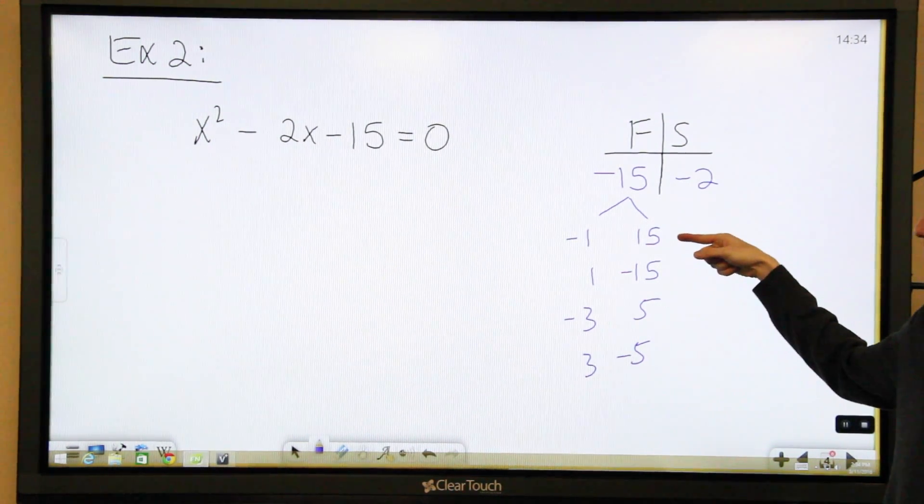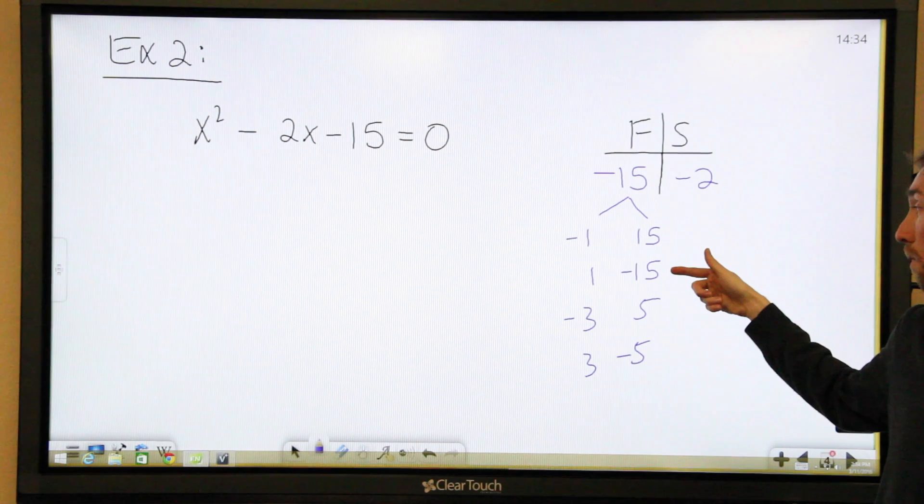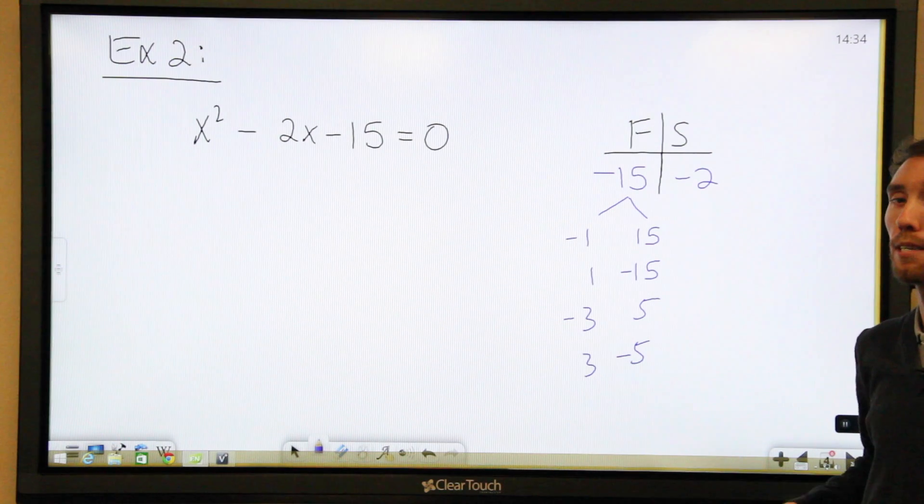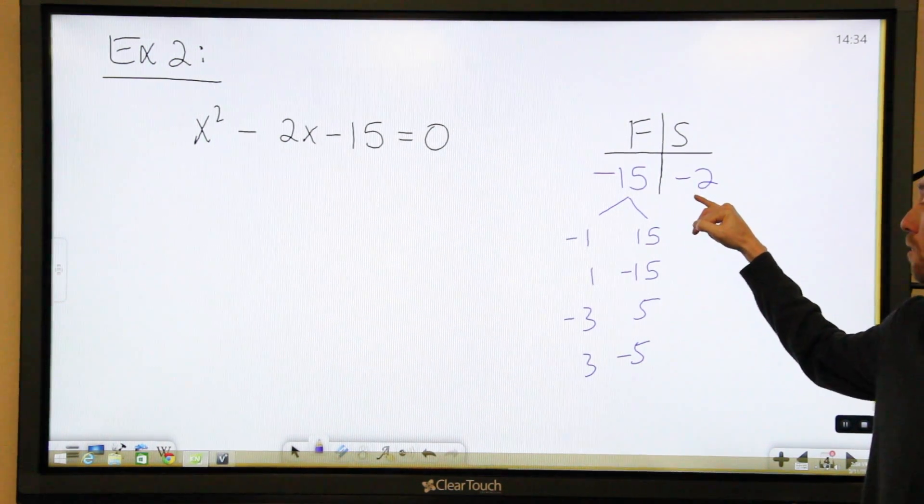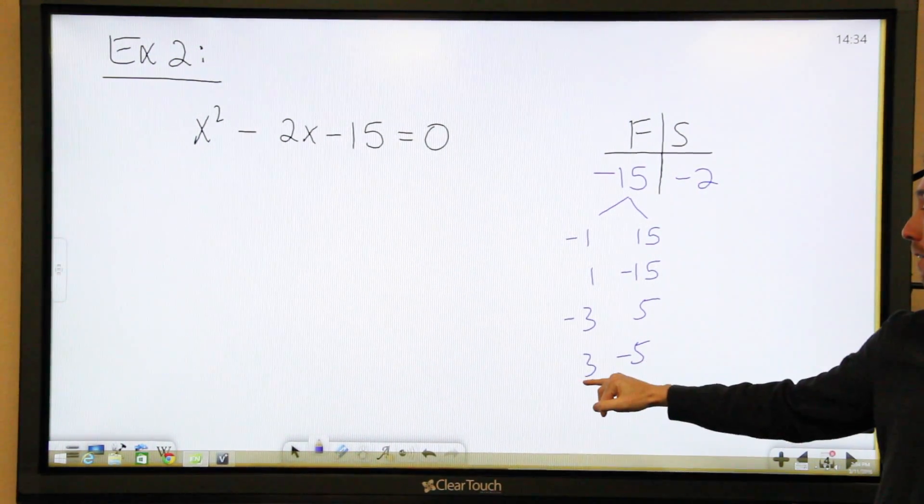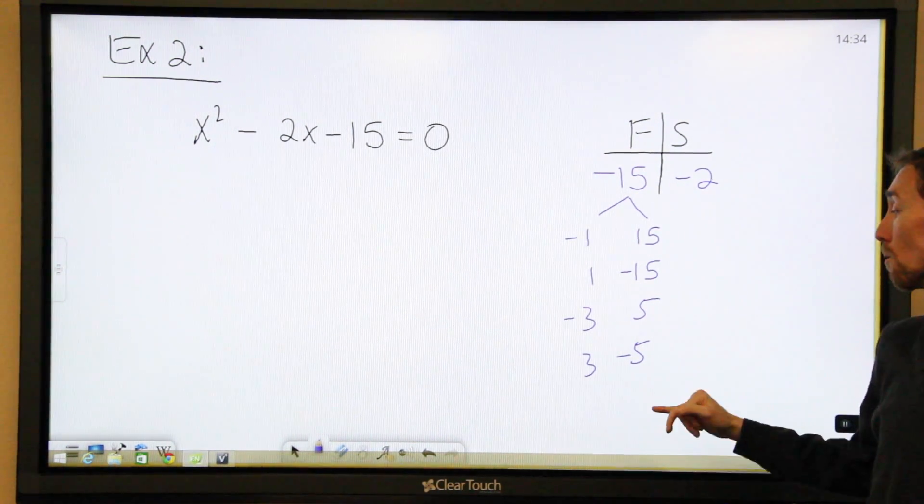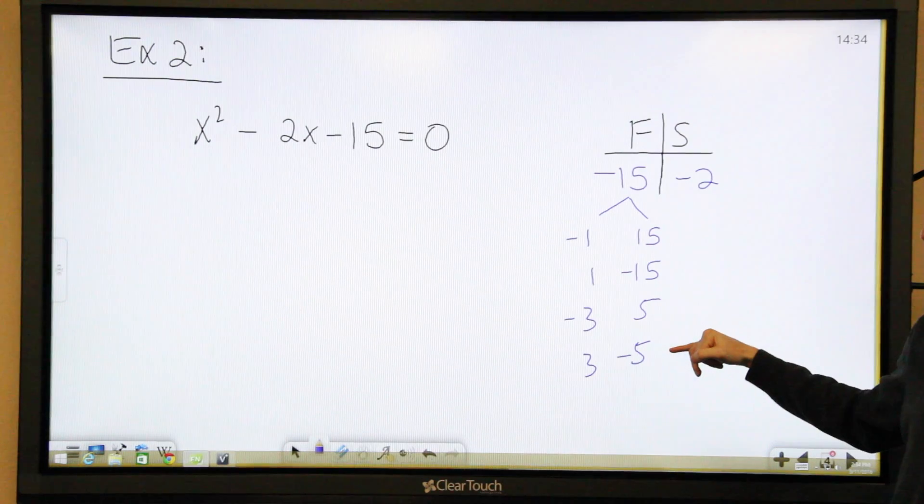So let's look at adding these up and see if any of them will equal negative 2. Negative 1 plus 15 is not going to work. 1 plus negative 15 isn't going to work either. Negative 3 plus positive 5 is a positive 2, which is close, but we want a negative 2. Positive 3 plus negative 5 is going to get us a negative 2. So these are the two numbers that we need to use.